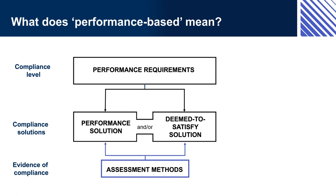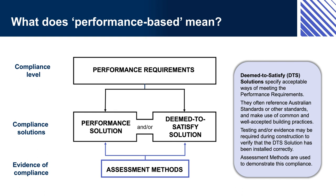There are three options for different types of compliance solutions. A deemed-to-satisfy (DTS) solution uses specified ways of meeting the performance requirements, included in the NCC as DTS provisions. In law, to 'deem' means to consider something as having certain characteristics. So if a DTS solution is used, it is automatically considered to meet the performance requirements. Note that testing during construction may be necessary to demonstrate that a DTS solution has been installed correctly. The DTS provisions make use of well-known established building and construction techniques, or specify reference documents such as Australian standards — meaning that if the specified construction method is used, the building is deemed to comply with the performance requirements.